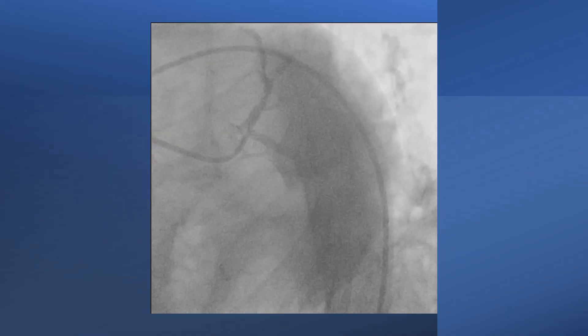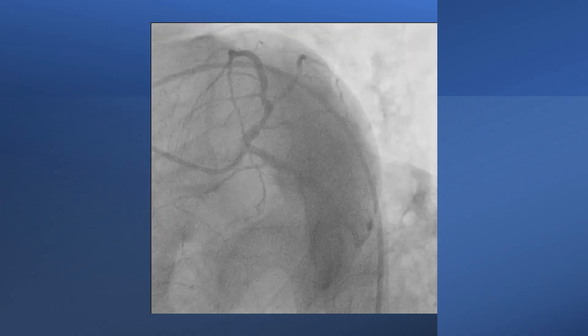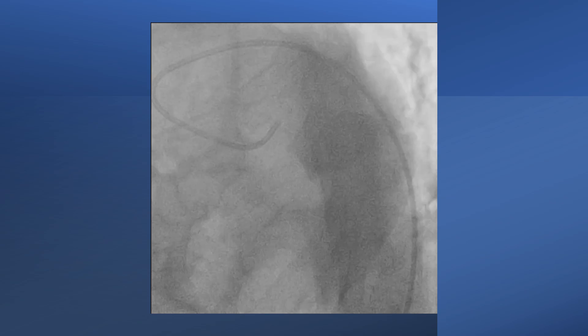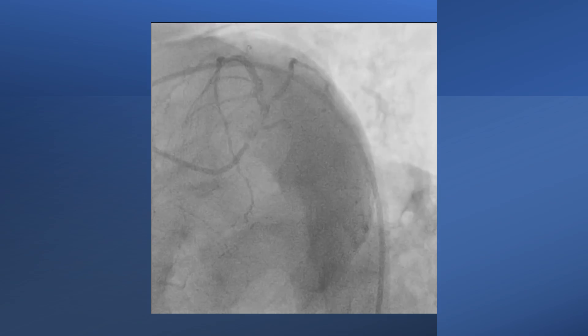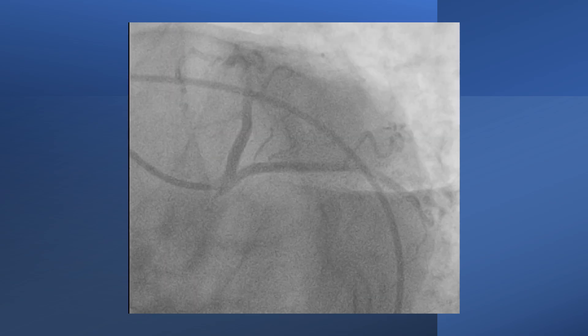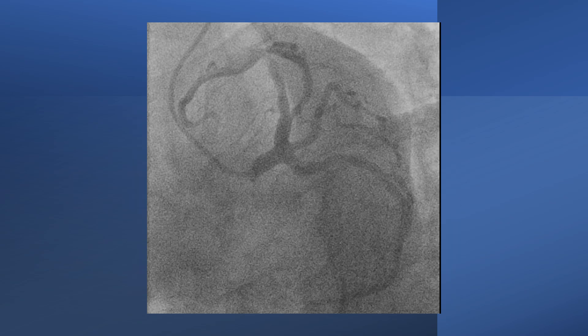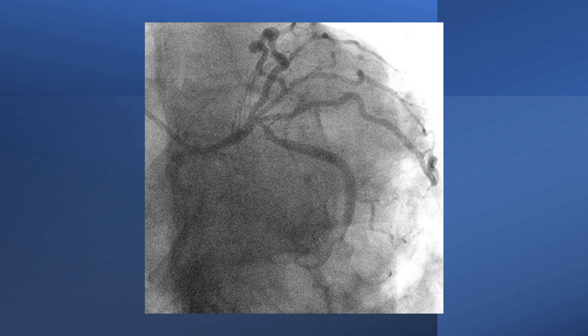A short left main stem or a separate circumflex and LAD is considered a common normal variant. The left main stem may divide into two branches, the LAD and the circumflex — this is the usual — or it may trifurcate into a third branch called the ramus intermedius, and in very rare conditions, it quadrifurcates.